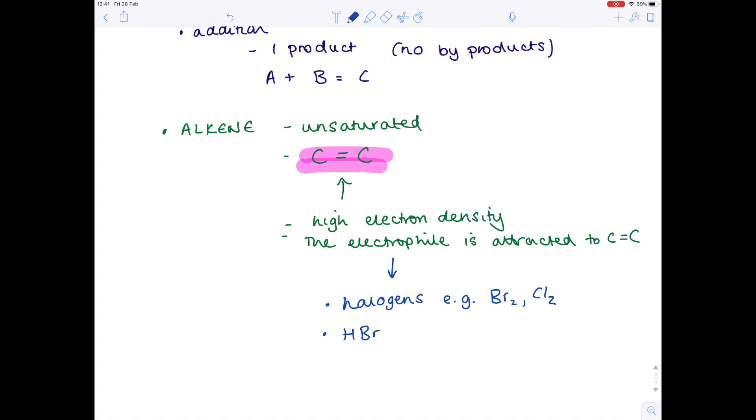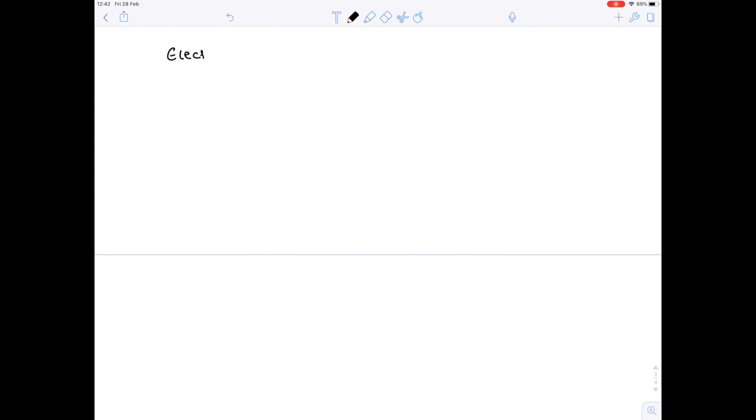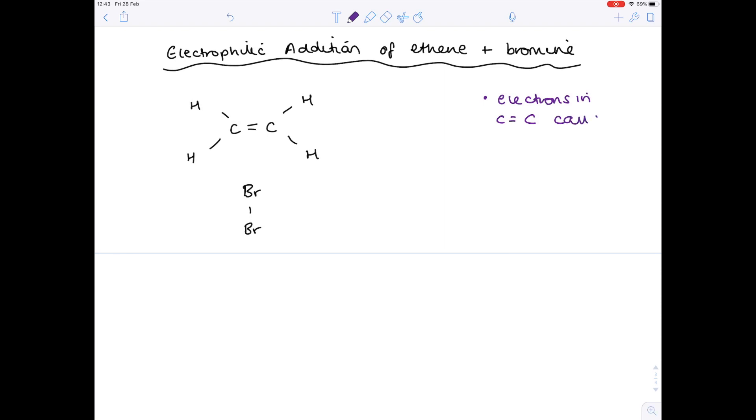Now we can actually get going on looking at the mechanism. We're going to look at the electrophilic addition mechanism of ethene and bromine. Let's start by drawing ethene. Remember it has two carbon atoms, and its molecular formula is C2H4. I've drawn out its structural formula here. And then bromine, remember, is a diatomic molecule, which is why we have to draw it like this.